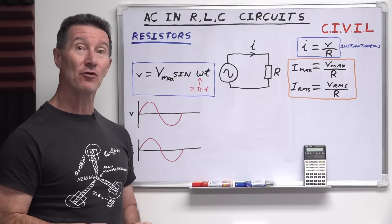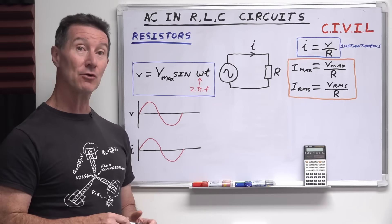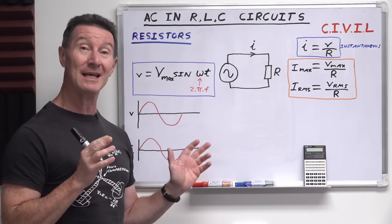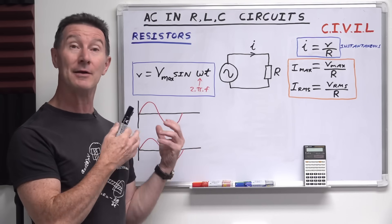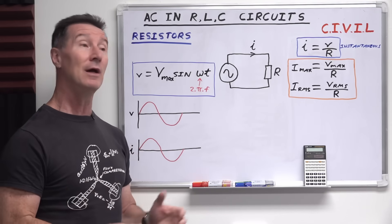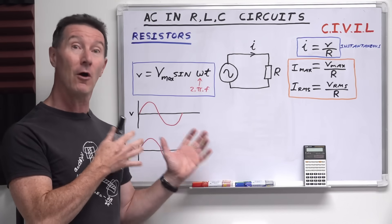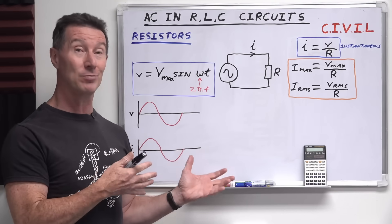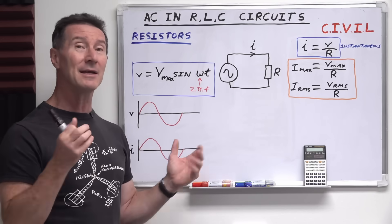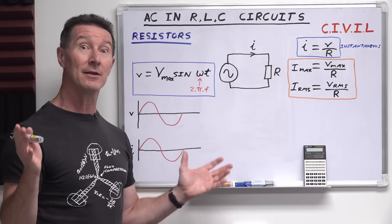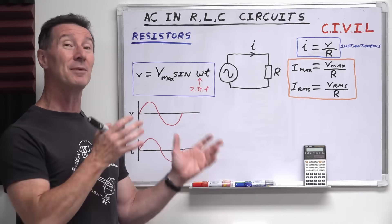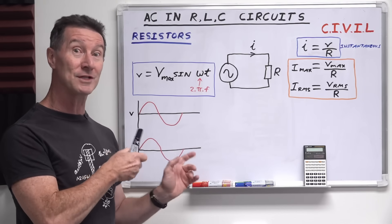This is part four in the AC tutorial series. Previously we've taken a look at what AC is, how it's formed, phases, and also complex numbers. Now we have to go back to Ohm's law, because Ohm's law applies to AC just as well as it does to DC, and it's basically exactly the same. You don't really have to learn any new formulas; you have to be aware of new concepts.